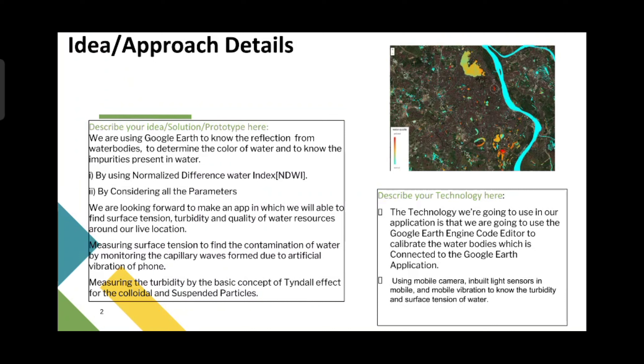By using this we have created a prototype which determines the quality of water from Google Earth images. All you need to do is note down the longitude and latitude of a particular water body in the form of a polygon, insert these values and run the program. The selected area will be calculated on the basis of the impurities present on the surface.